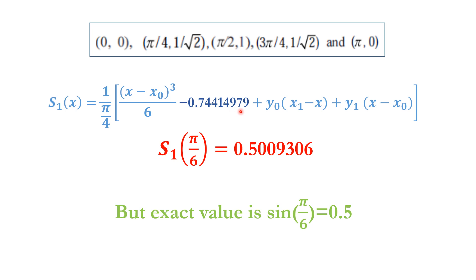With M₁ = -0.74414979, our S₁(x) becomes this. Now we will substitute the values of x₀, y₀, x₁, y₁, and M₁ to find S₁(π/6). We also put x equal to π/6.